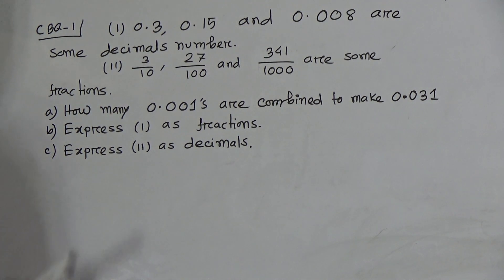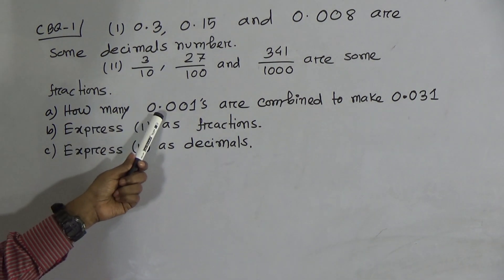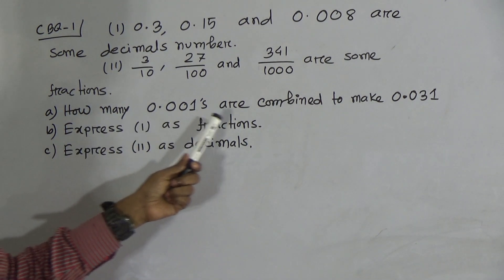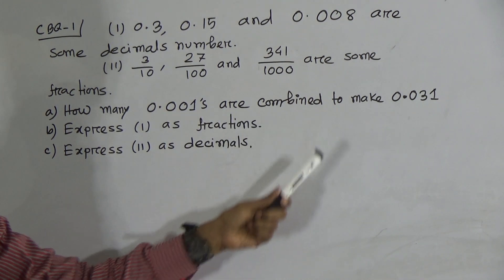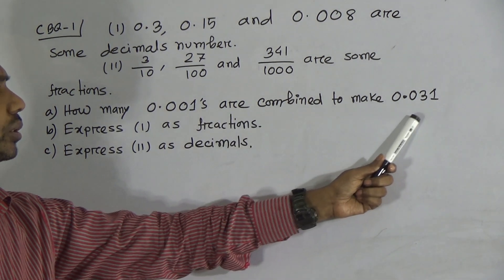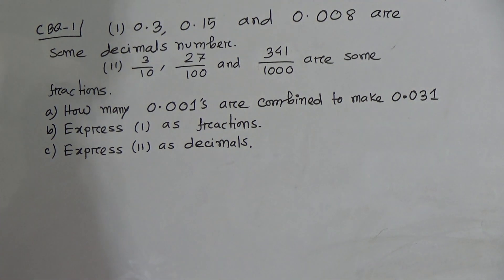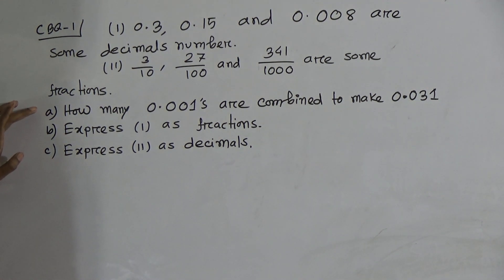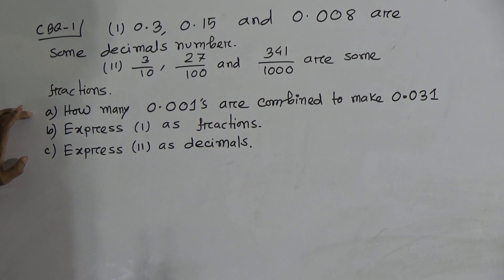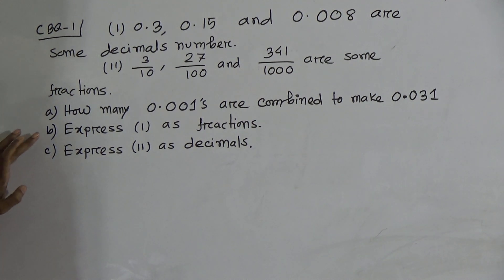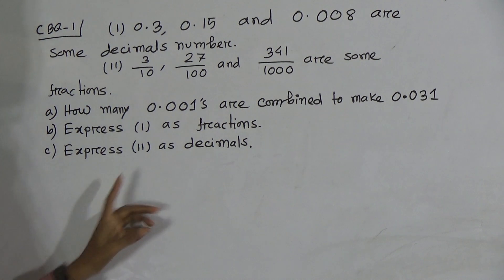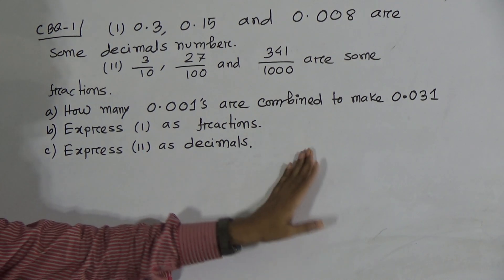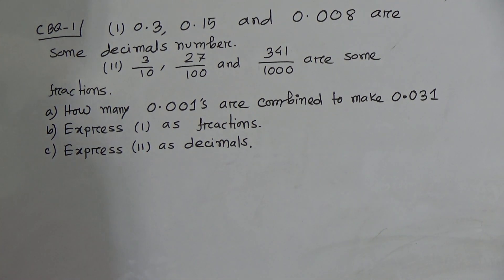Question number 1: How many 0.001s are combined to make 0.031? This question is included in your book, page 120, question number 2.